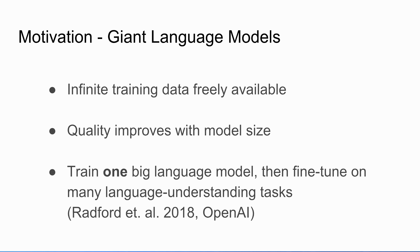For language modeling, there's an almost infinite amount of data available — just crawl the web and predict it. Bigger models work a lot better. In fact, according to some recent work at OpenAI, you really only have to train one big language model and specialize it to get state-of-the-art performance on a whole bunch of different things. So it all points to: let's train a huge model.